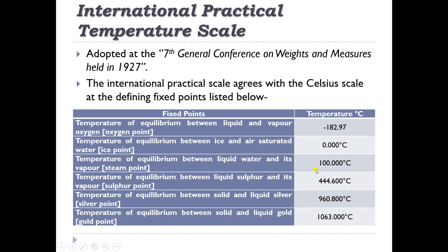Further fixed points include: the steam point (equilibrium between liquid water and its vapor) at 100.000°C; the sulfur point (equilibrium between liquid sulfur and its vapor) at 444.600°C; the silver point (equilibrium between solid and liquid silver) at 960.800°C; and the gold point (equilibrium between solid and liquid gold) at 1063.000°C. These are the fixed points adopted in coordination with the Celsius scale.